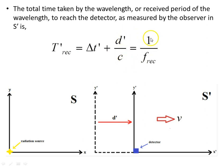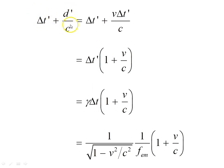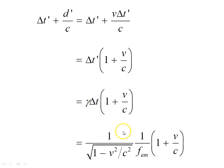The total received period is delta T dash plus D dash over C. Since D dash equals V times delta T dash, we can factor out delta T dash, giving delta T dash times (1 + V/C). Replacing delta T dash with gamma times delta T, and delta T with 1 over F emitted, we get 1 over F received equals (1/F emitted) times gamma times (1 + V/C).